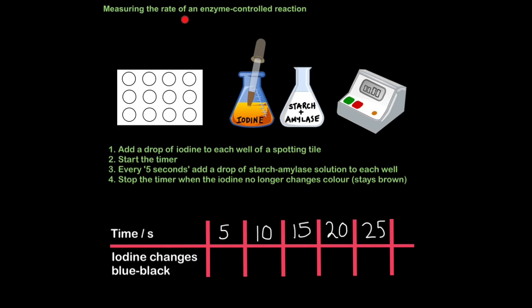Now let's look at how we measure the rate of an enzyme controlled reaction. I'm going to give you the base experiment here for which you can adapt to test out different factors such as pH and temperature and substrate concentration as I've just shown you. For this, in addition to safety goggles, because iodine is harmful, you will need a spotting tile. That's the small white plastic dishes you get with wells in them. You will need iodine solution and a pipette. You will need starch and amylase solution, very freshly made. You can't leave this to stand for long because otherwise the amylase will break down all the starch. And you'll need a stop clock. The first thing you do is add a drop of iodine to each well of a spotting tile. Then you start the timer.